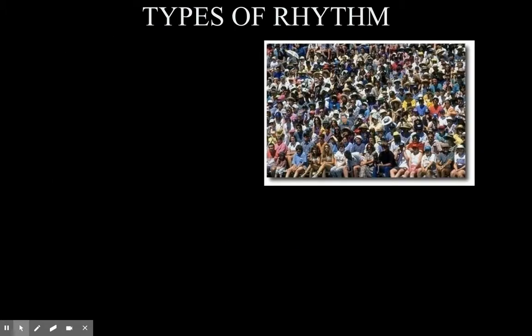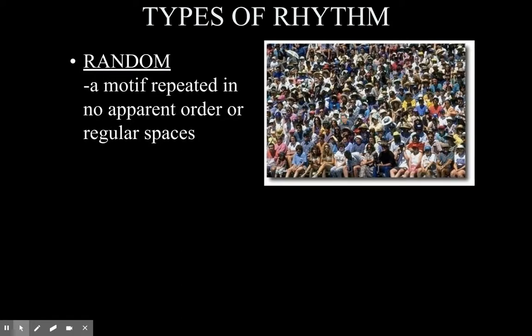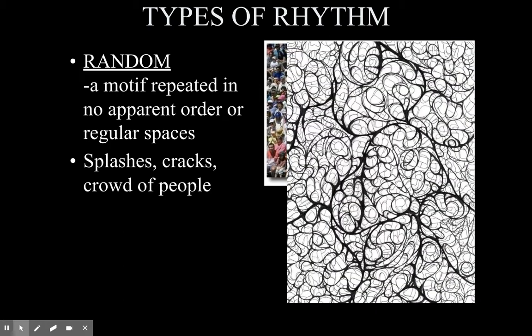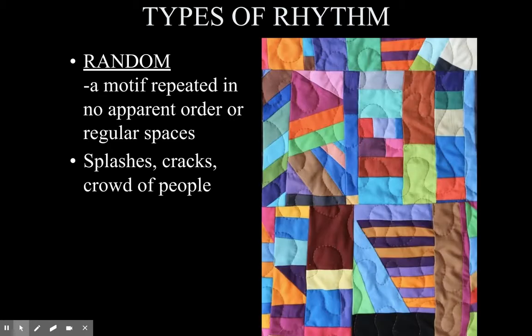There are different types of visual rhythm. The first is random rhythm. In a random rhythm, a motif is repeated in no apparent order — there are no regular spaces. The motif is totally random; it changes and is different. Think about splashes, cracks, or even crowds of people. Each person is different, and the spacing between each person is different — it's completely random. You can draw a bunch of swirly, squiggly lines in that empty box to show random rhythm.